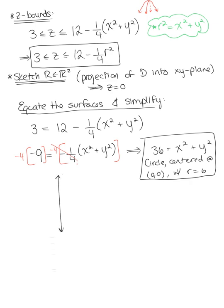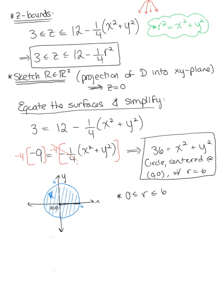Sketching this in two dimensions with the y-axis and x-axis, here is our two-dimensional region R — a circle with radius 6. We use this two-dimensional region to identify the bounds on r and theta. The circle is centered at the origin, so the smallest radius is 0 and the largest is 6: r is between 0 and 6. Because we have a complete circle, theta goes from 0 to 2π. Now we have all the bounds we need.